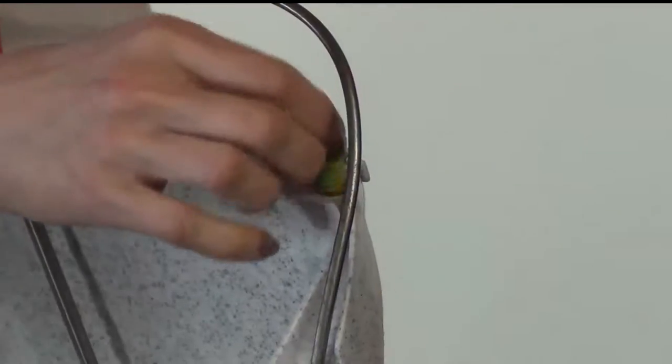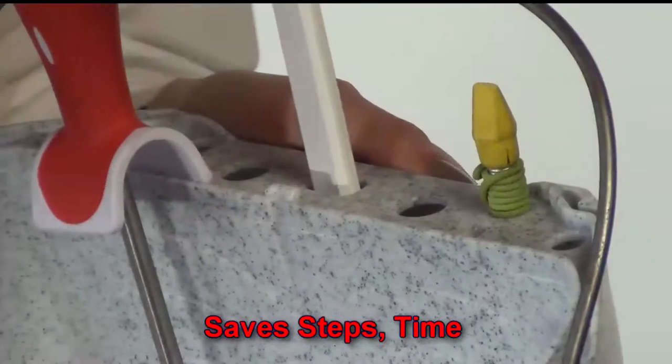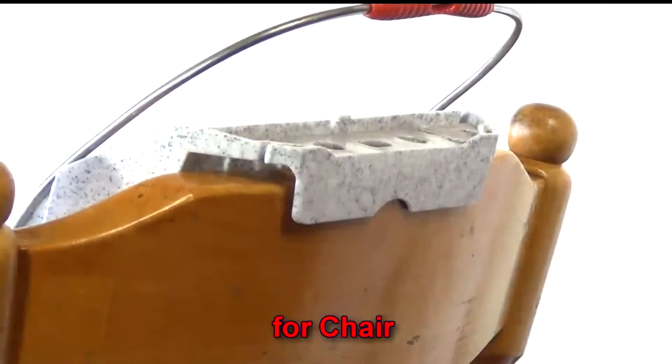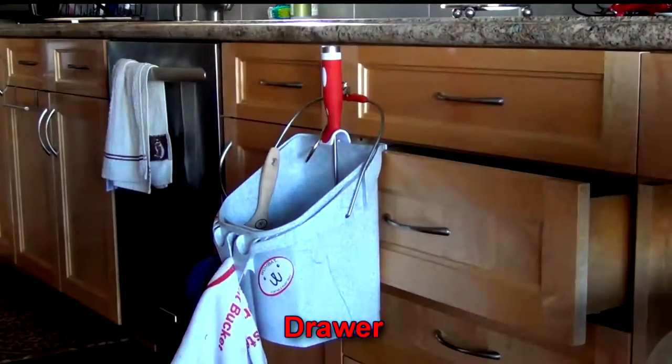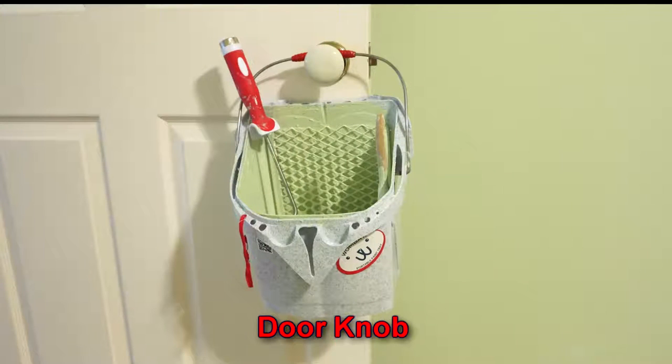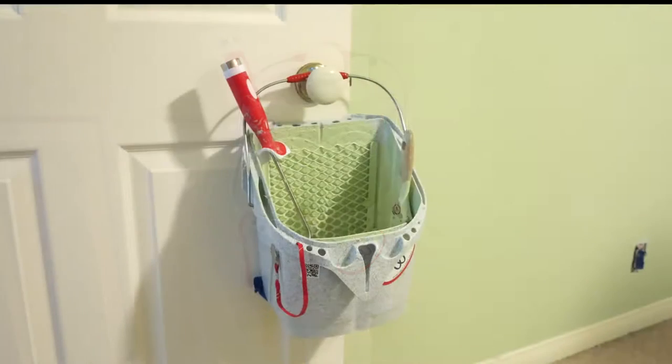The grip lip on the back of the Wombat Port-a-Paint hangs on a chair, or a drawer, or a cabinet, and the handle hangs conveniently on a doorknob. No more bending down to the floor.